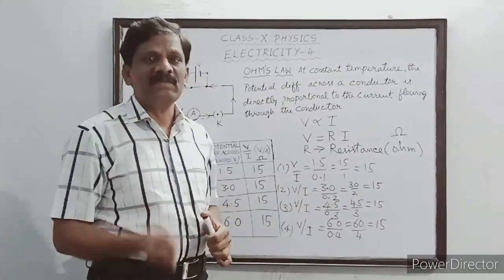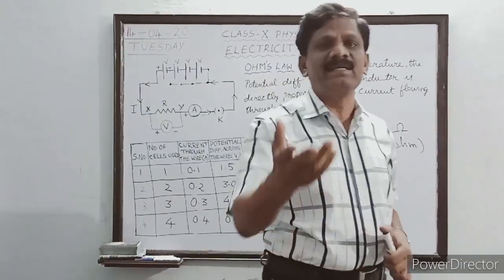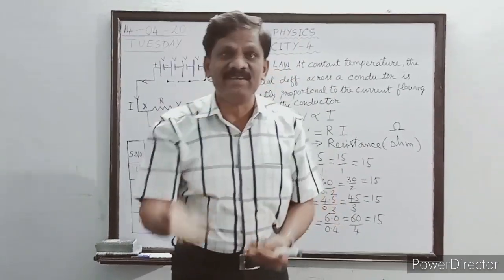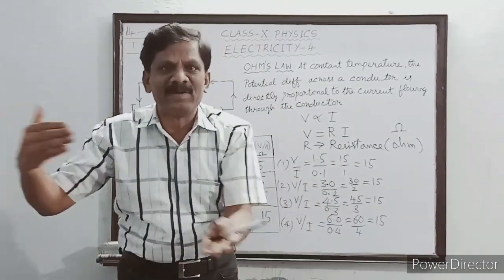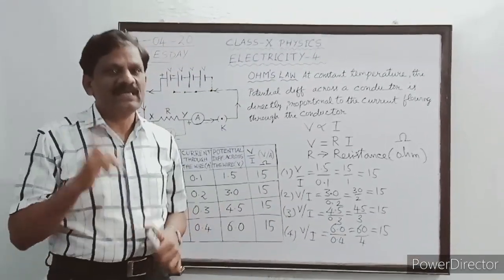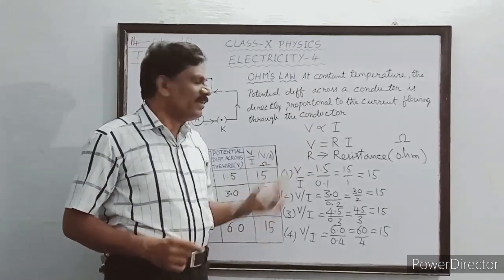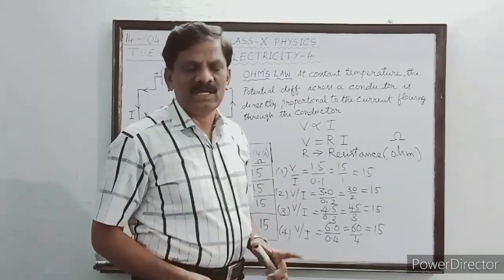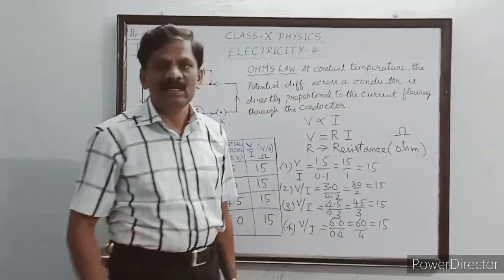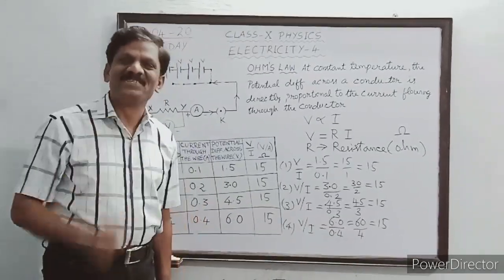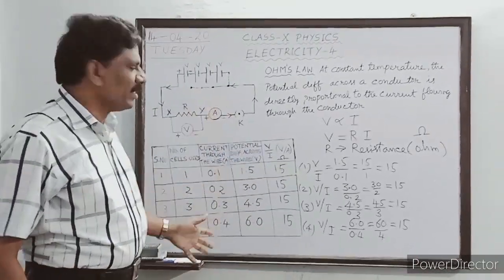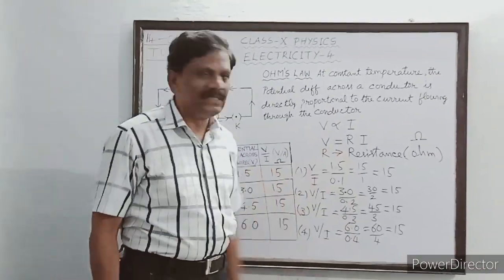What happens if you heat a conductor? If the temperature is suddenly increased, the ions absorb the heat and vibrate vigorously. When they vibrate more vigorously, more opposition is offered to the flow of free electrons. That is why the relationship V by I will be constant only provided the temperature is constant. That is why the statement begins with 'constant temperature'.